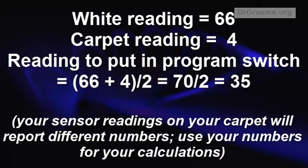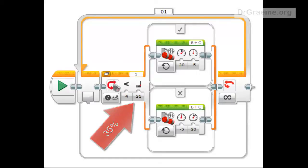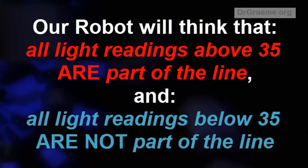We calculate the average of these two numbers and put it in our line following program here. As we showed you in the last tutorial, our robot will think that all light readings above or equal to 35 are part of the line. And all light readings below 35 are not part of the line.